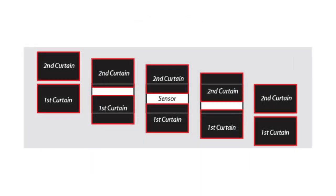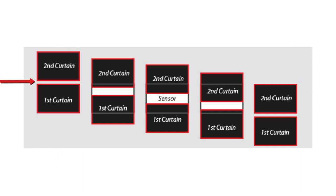For fast exposures, as the rear curtain is beginning to open, the front curtain is already beginning to close. This leaves only a small horizontal slit for the light to pass through.